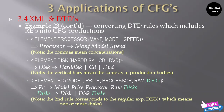Converting DTD rules, which include regular expressions, into context-free grammar productions: the element processor maps to manufacturer, model, speed — this is one production where commas mean concatenations. The element disk maps to hard disk or CD or DVD — disk tends to hard disk, CD, or DVD. Similarly, the PC production can be written as model, processor, ram, disk.